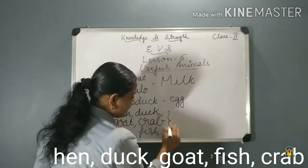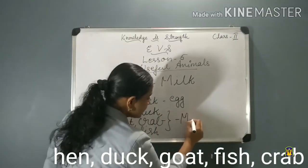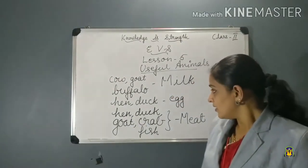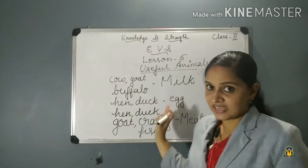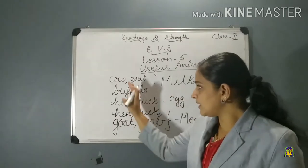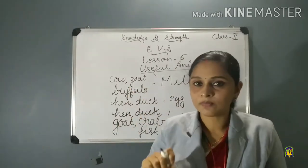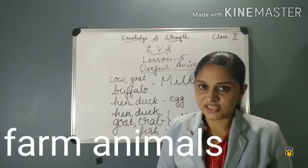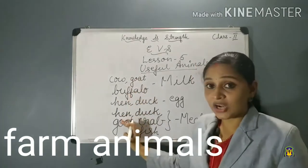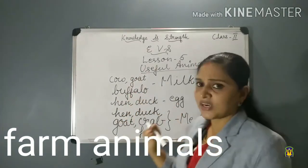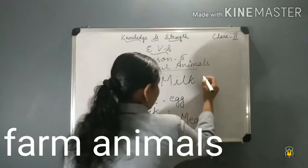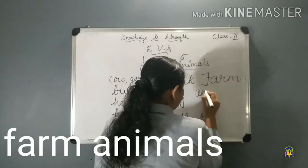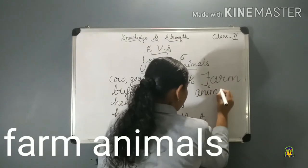So hen, duck, goat, fish, crab, and prawns give us meat. For getting these useful things, some people keep these animals at home. These animals are called farm animals. The spelling of farm is F-A-R-M — farm animals, A-N-I-M-A-L-S.